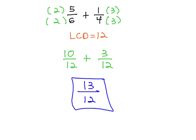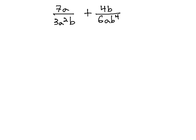We can use this pattern of identifying the LCD and building up both fractions in rational expressions, such as 7a over 3a squared b plus 4b over 6ab to the fourth. To get started, again, we must identify the least common denominator that we want to build up each fraction to match.